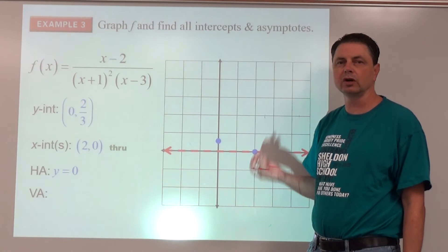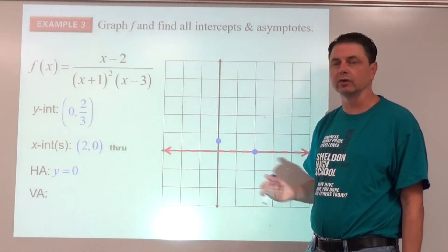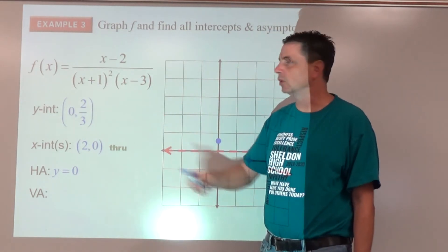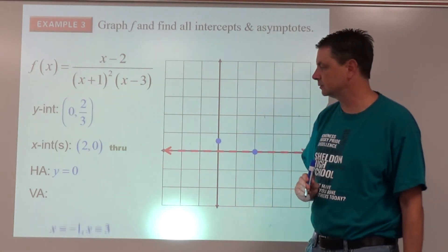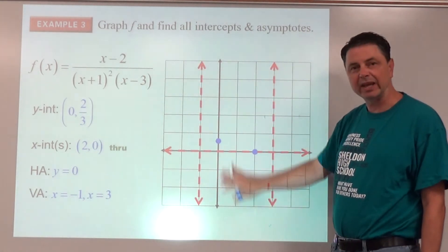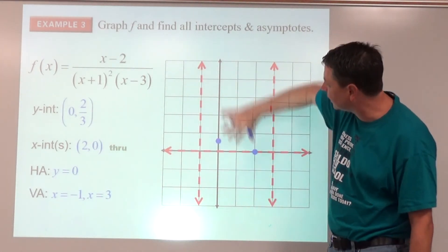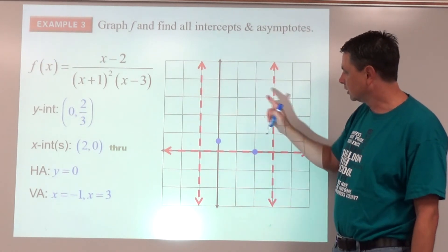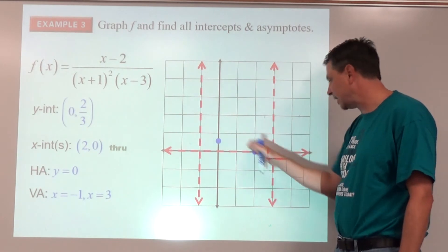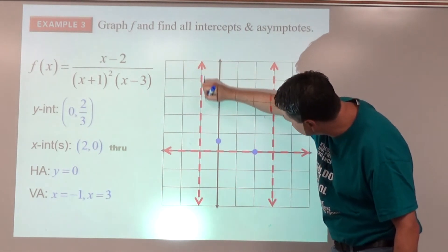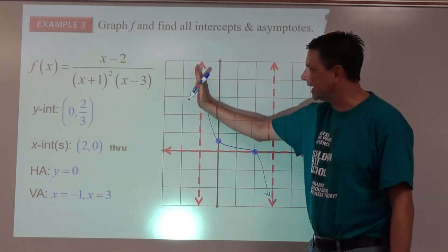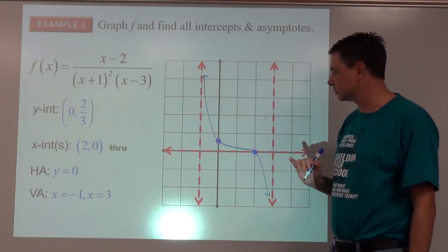The vertical asymptotes come from the denominator: x equals negative one and x equals 3. Draw those in. We have enough to draw the middle piece of the graph — it's a pass-through at (2, 0), not a bounce, approaching both vertical asymptotes.